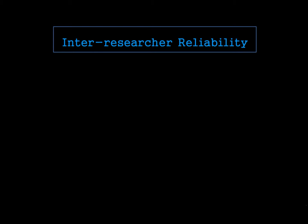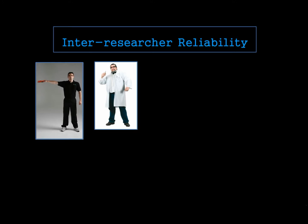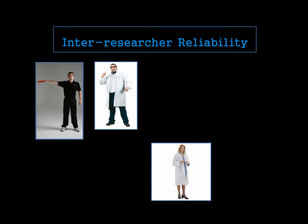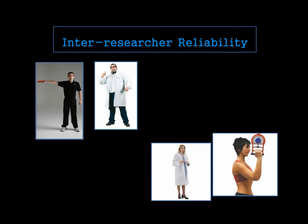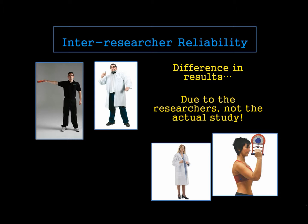Let's discuss inter-researcher reliability. Imagine a sports scientist conducting a study looking at hand grip strength. He asks the first subject to do the hand grip test holding the dynamometer out to the side. However, he can't do all the testing alone, so another researcher helps him — but this researcher asks subjects to hold the grip dynamometer at a right angle at the elbow and up in the air. The same study is asking people to do things in different ways, so subjects might get different results purely because the researchers gave different instructions. This is unreliability — to be reliable, everything needs to be consistent.